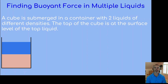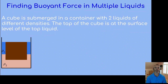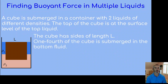What happens if we have a container with two different liquids of different densities? The less dense fluid floats to the top and the more dense fluid sinks to the bottom. We'll define those densities as rho-one and rho-two. We submerge a cube such that its top surface is at the level of the top fluid and it's partially in the bottom fluid. The cube has sides of length l, and one-fourth of the cube is submerged in the bottom fluid. Since we have two fluids, we don't choose one density — the buoyancy force is a combination of both.